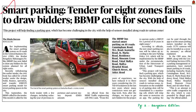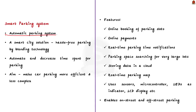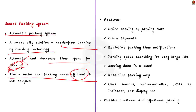The next news article mentions that a tender for smart parking in Bangalore did not attract any bidders, and a new bid has been floated. Smart parking is an automatic parking system and one of the most adopted smart city solutions worldwide. It provides a hassle-free parking solution by blending technology. The goal is to automate and decrease the time spent manually searching for parking floors and spots. It encompasses online booking, online payments, parking time notifications, and space-searching functionalities for large lots.